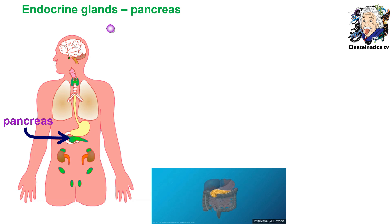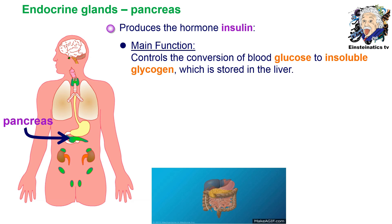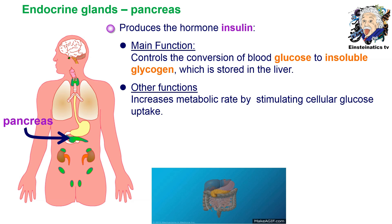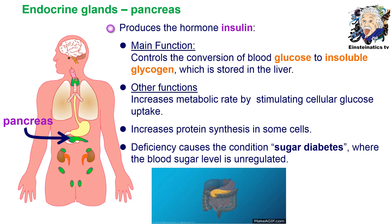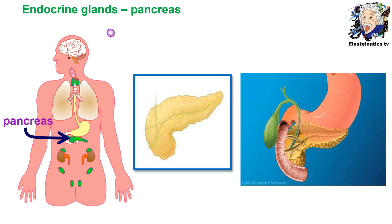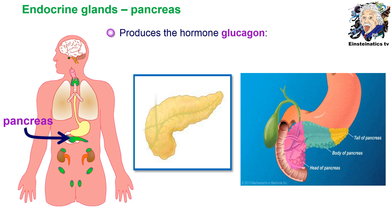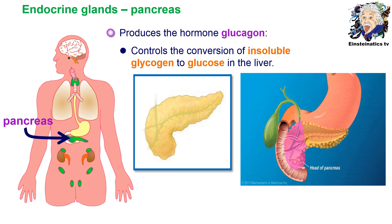The next type of endocrine gland is the pancreas, which produces the hormone insulin. The main function of insulin is to control the conversion of blood glucose to insoluble glycogen, which is stored in the liver. It also increases metabolic rate by stimulating cellular glucose uptake, increases protein synthesis in some cells, and its deficiency causes sugar diabetes, whereby blood sugar level is unregulated or excessively high. The pancreas also produces the hormone glucagon, which controls the conversion of insoluble glycogen back to glucose in the liver.